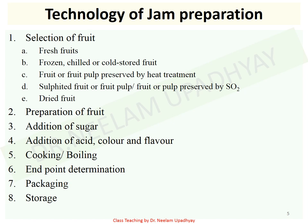Regarding sulfur dioxide treatment given to fruit pulp or fruit: it can be added in the form of sodium or potassium metabisulphite. Fruits can also be preserved using calcium sulphite, which results in hardening of tissues and prevents disintegration of fruit tissues. However, for preparation of jam, as per FSSR, sodium or potassium metabisulphite is permitted in jams. Therefore, if fruits are treated with calcium sulphite, these should not be used for preparation of jam.